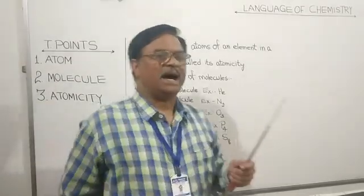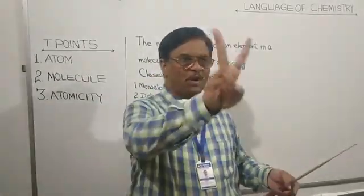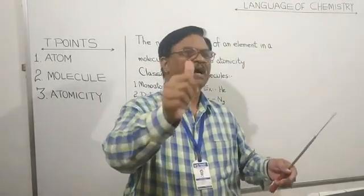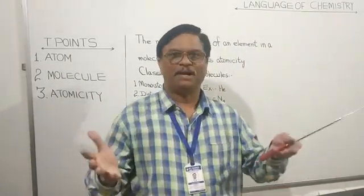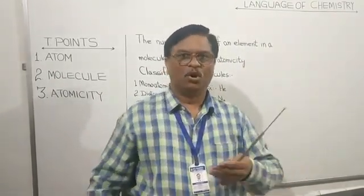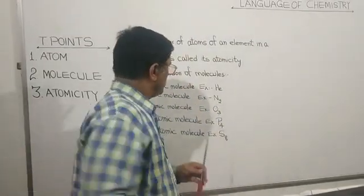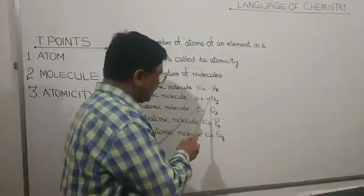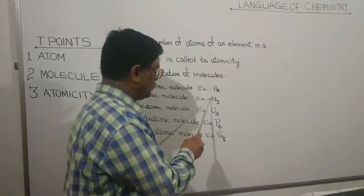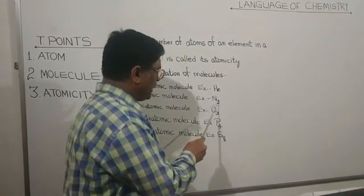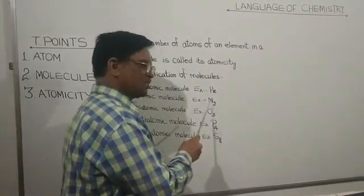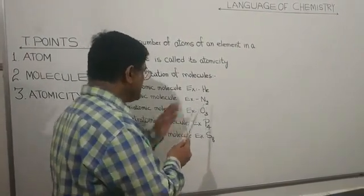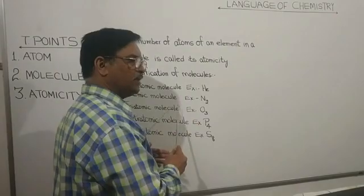Second is diatomic molecules. When two atoms are present in one molecule, that molecule is said to be a diatomic molecule. Example: nitrogen molecule N2. Look carefully — nothing is written before N, therefore it is one molecule. The subscript 2 is written, therefore there are two atoms. Two atoms are present in one molecule, therefore N2 is a diatomic molecule.